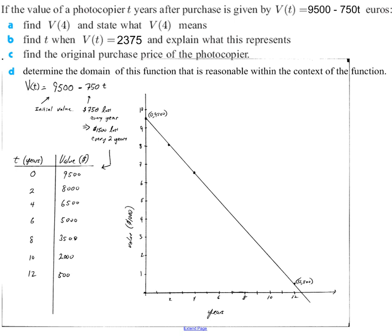This problem has to do with the value of a photocopier, where t represents the independent variable, the amount of time since purchase, and V(t) represents the dependent variable, the value depending on how old the machine is. Our tasks are to find V(4) and state its meaning in context, find t when V(t) = 2375 and explain what this represents, find the original purchase price of the photocopier, and determine the domain of this function that is reasonable within the context. That last part gives a lot of people trouble, but it will all make sense if you stay tuned.